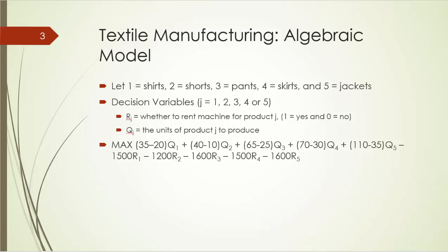Let's look at our objective function. We would like to maximize profit, and the objective function looks like this: 35 minus 20, which is the unit profit of product 1 times q1, plus 40 minus 10 times q2, plus 65 minus 25 times q3, all the way to 110 minus 35 times q5. We also subtract rental costs: minus 1500 times r1, minus 1200 times r2, all the way to minus 1600 times r5.